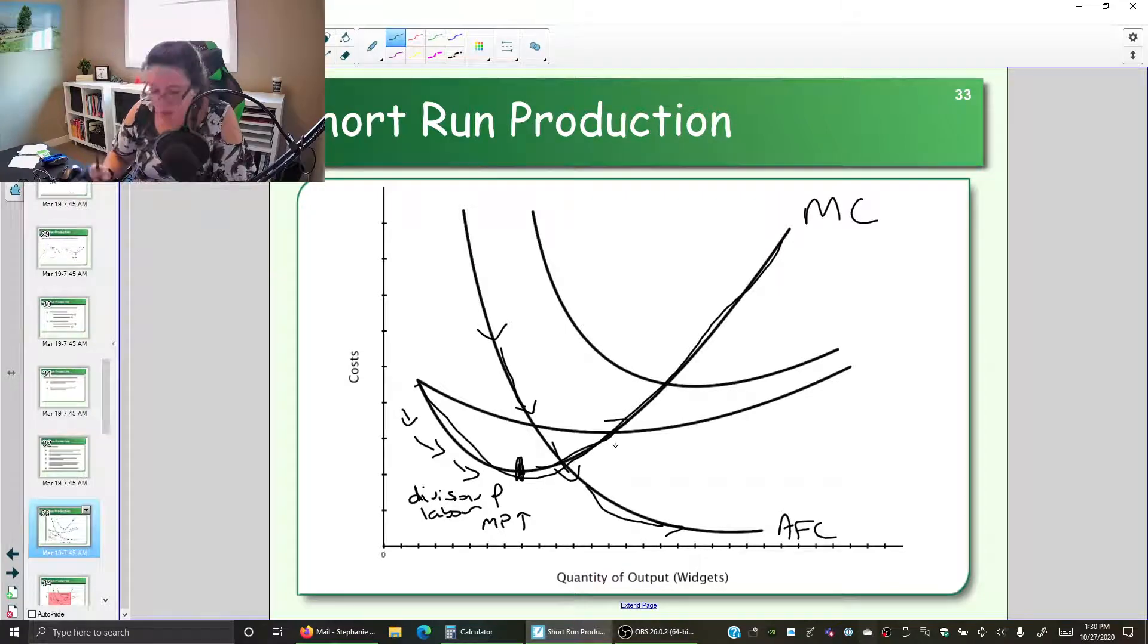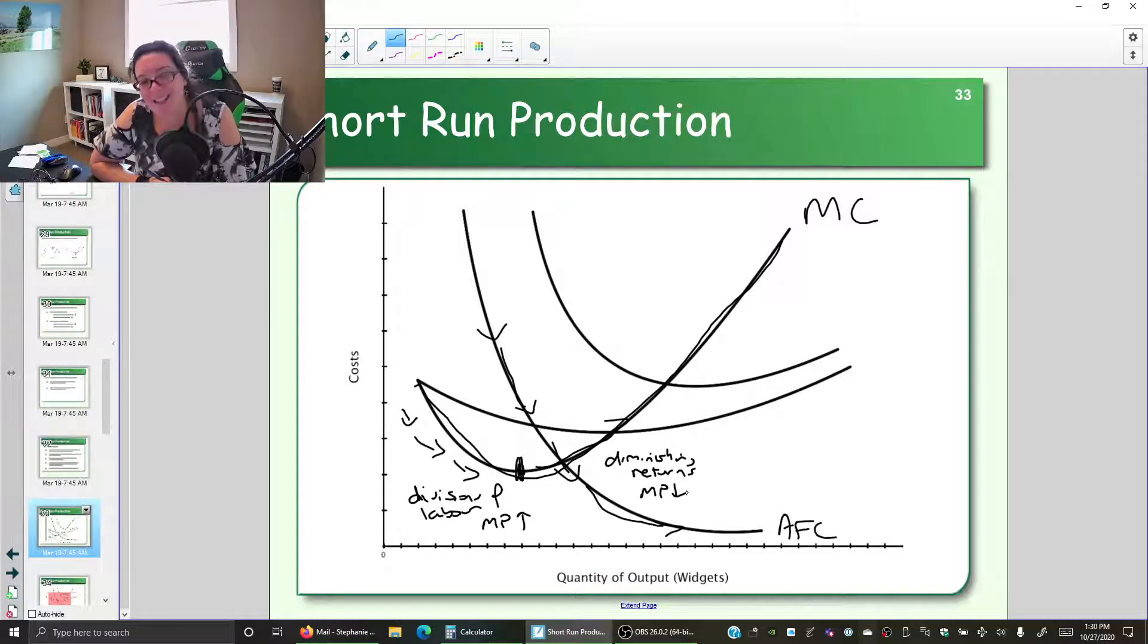Then the marginal cost starts going up because as we add more and more workers, we can't keep adding more and more specialized and different tasks. We start to get diminishing returns—a decreasing marginal productivity. Each additional worker adds less than the person before, giving us a checkmark-shaped marginal cost.